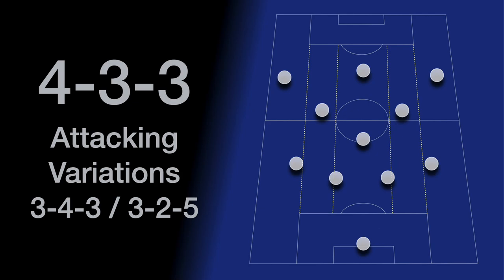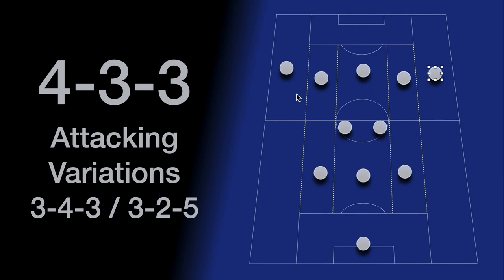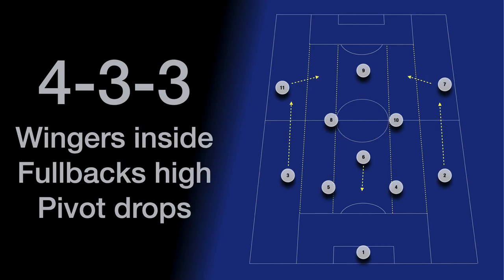The question is, how are we getting from this general structure with a back 4, a midfield 3, and 3 forwards up higher in the pitch? How are we getting from that into a back 3, a 2 in midfield — so either a 3-4-3, depending on the height of the wide players, or even a 3-2-5 because these players are so high and wide? Let's have a look at the different ways to get from the 4-3-3 into these systems, starting with the wingers coming inside, the full-backs moving high, and the pivot dropping in between the two centre-backs — or coming to the side instead of into the middle.